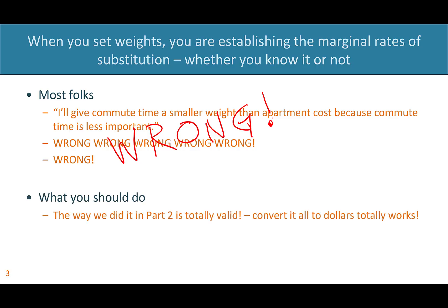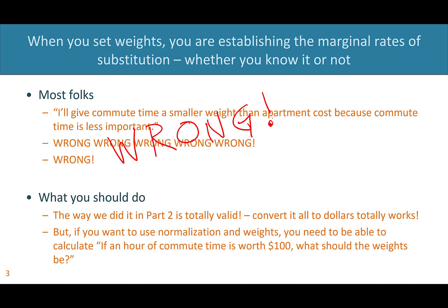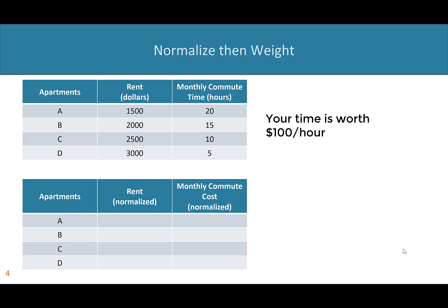If that's not correct, how should you think about it? The way we did it in part two is totally valid — you can convert everything to dollars and it totally works. But if you want to use normalization and weights, which a lot of people like to use when doing multi-objective or multi-attribute decisions, you need to be able to calculate what the weights should be if an hour of commute time is worth $100, or whatever it's worth.